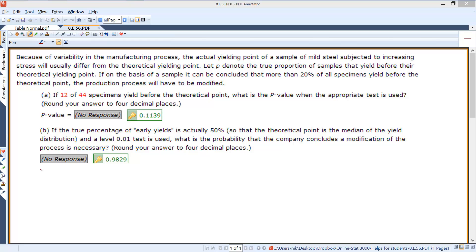If on the basis of a sample it can be concluded that more than 20% of all specimens yield before the theoretical point, the production process will have to be modified. In a total of 41 specimens that yield before the theoretical point, what is the p-value in the appropriate test?